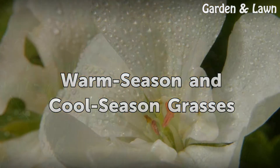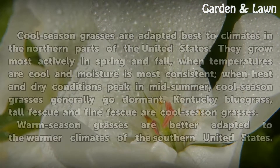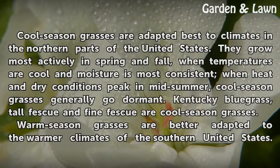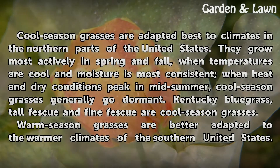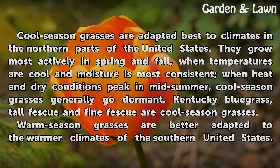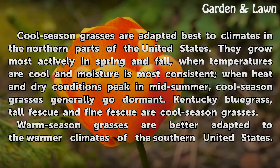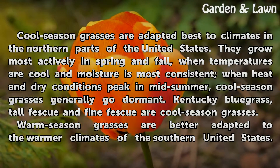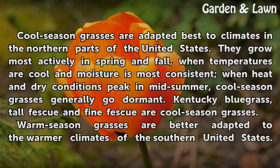Cool season grasses are best adapted to climates in the northern parts of the United States. They grow most actively in spring and fall, when temperatures are cool and moisture is most consistent. When heat and dry conditions peak in mid-summer, cool season grasses generally go dormant. Kentucky Bluegrass, Tall Fescue, and Fine Fescue are cool season grasses.